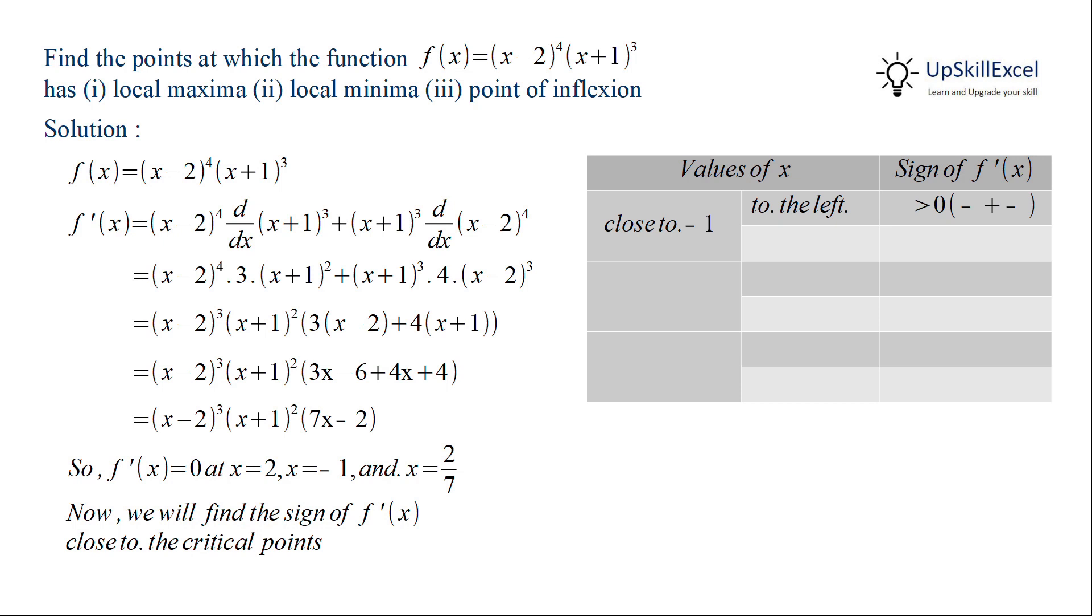When x is close to -1 from the left hand side, we observe that first and third term will have negative sign. Hence the sign of f'(x) will be positive. Similarly when we approach from the right hand side, the sign of f'(x) will be again positive as both first and third term are negative.